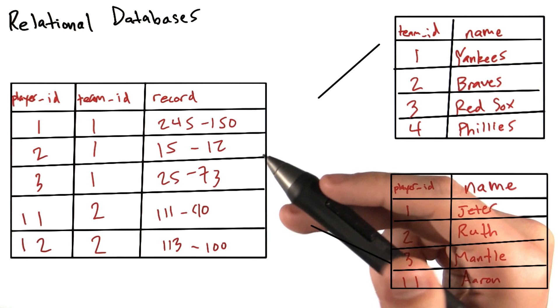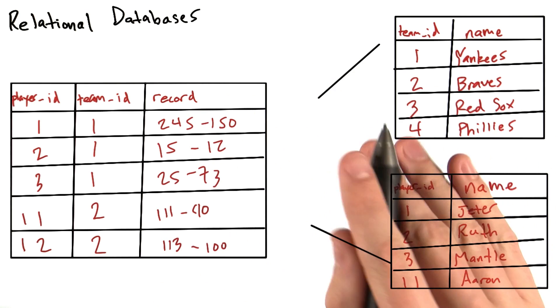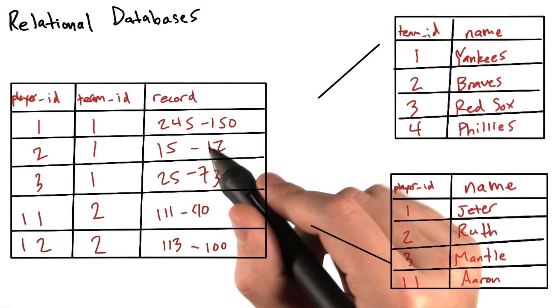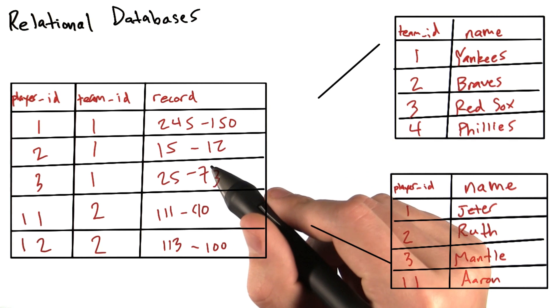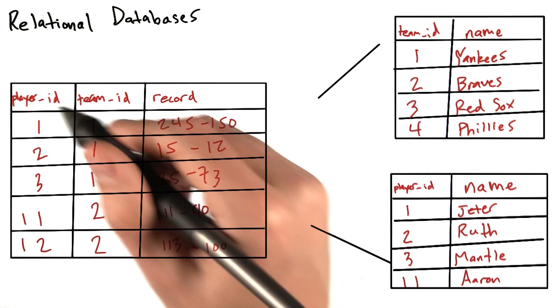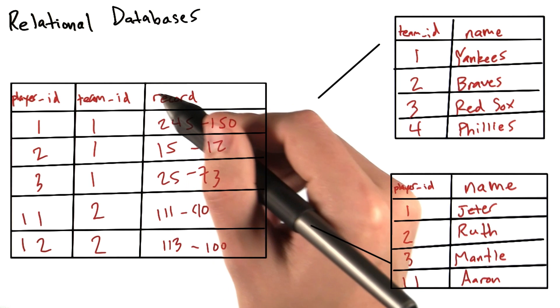A relational database is similar to a collection of spreadsheets. In each spreadsheet, there are columns and rows. A column specifies a value and its type, such as player ID or team ID or record.